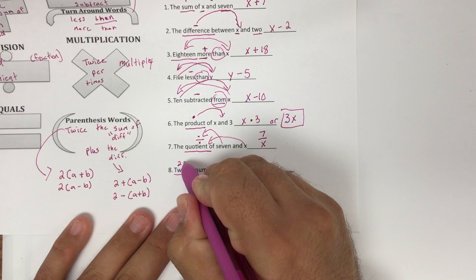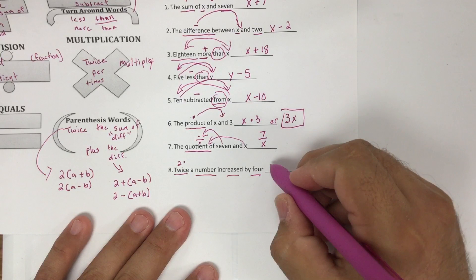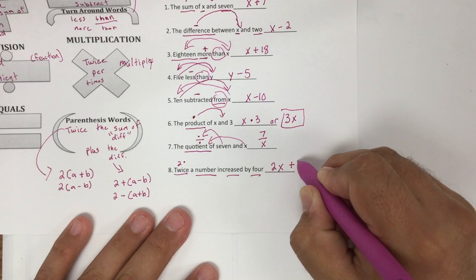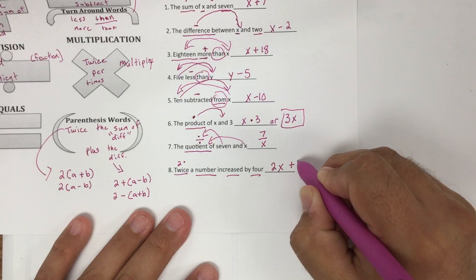And last but not least, twice, that means two times, a number increased by four. So two times the number. So two times X increased by four. There's no parentheses. It's not saying twice the sum of, it's saying twice a number. So that's the key piece right there. And then increased by four.